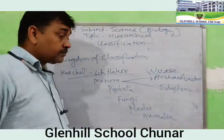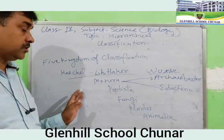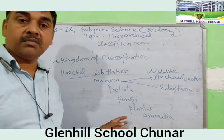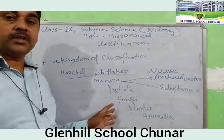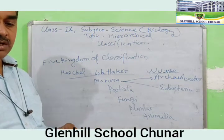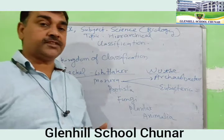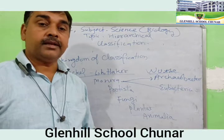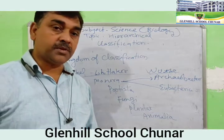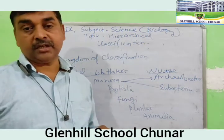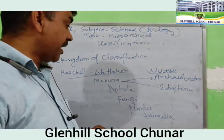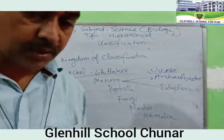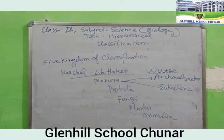Now students, we will discuss the five kingdoms of classification — Monera, Protista, Fungi, Plantae, and Animalia — one by one. We will study some features based on their body structure, nutrition, and reproduction. Get ready to write down these features.